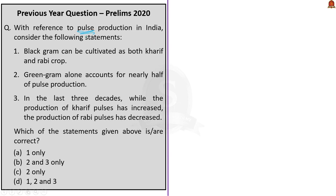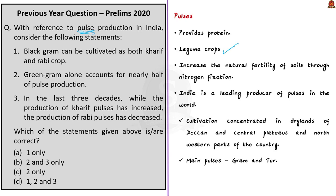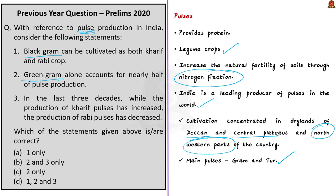Pulses provide us with protein. Pulses are legume crops which increase the natural fertility of soils through nitrogen fixation. India is a leading producer of pulses in the world. Pulses cultivation is largely concentrated in the drylands of Deccan Plateau and Central Plateau and also in the northwestern parts of the country. Gram and toor are the main pulses cultivated in India. The question focuses on two statements about black gram and green gram.